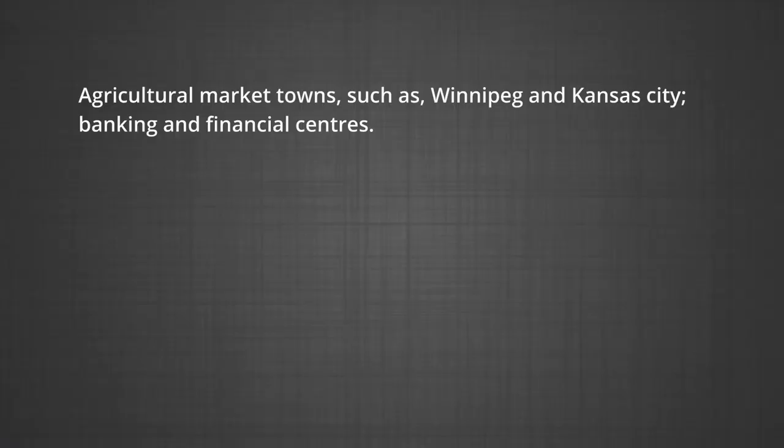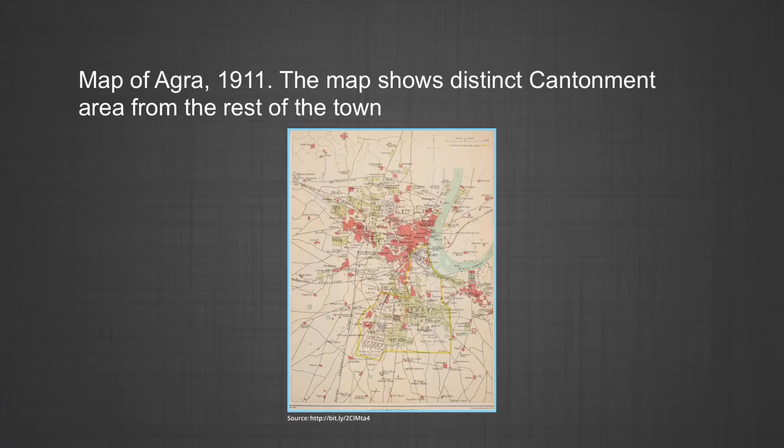Trading and commercial towns: Agricultural market towns such as Winnipeg and Kansas City, banking and financial centers like Frankfurt and Amsterdam, large inland centers like Manchester and St. Louis, and transport nodes such as Lahore, Baghdad, and Agra have been important trading centers. The map of Agra from 1911 shows a distinct cantonment area separated from the rest of the town.